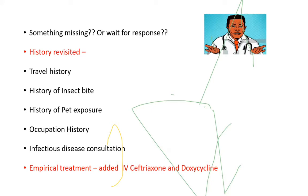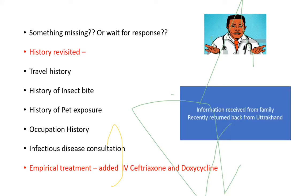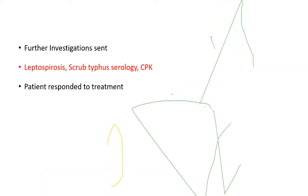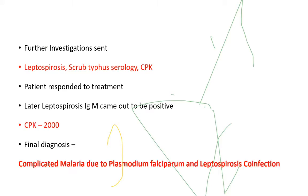Information was received from the family that the patient had recently returned from Uttarakhand, suggesting a travel-associated fever. Leptospira and scrub serology were sent, and CPK was also sent because the patient was reporting extreme myalgia. Ultimately the patient responded to treatment. Leptospira IgM came out positive, and the final diagnosis was complicated malaria due to falciparum and leptospirosis co-infection.